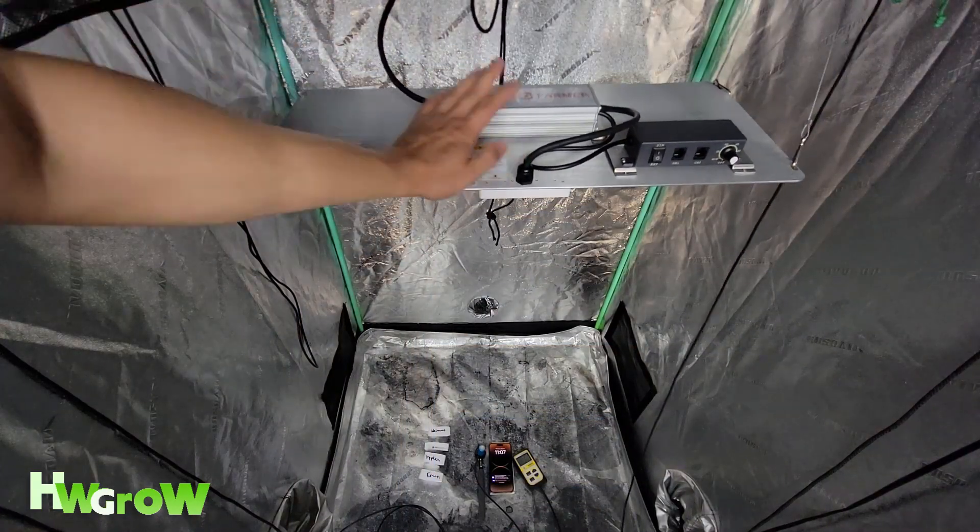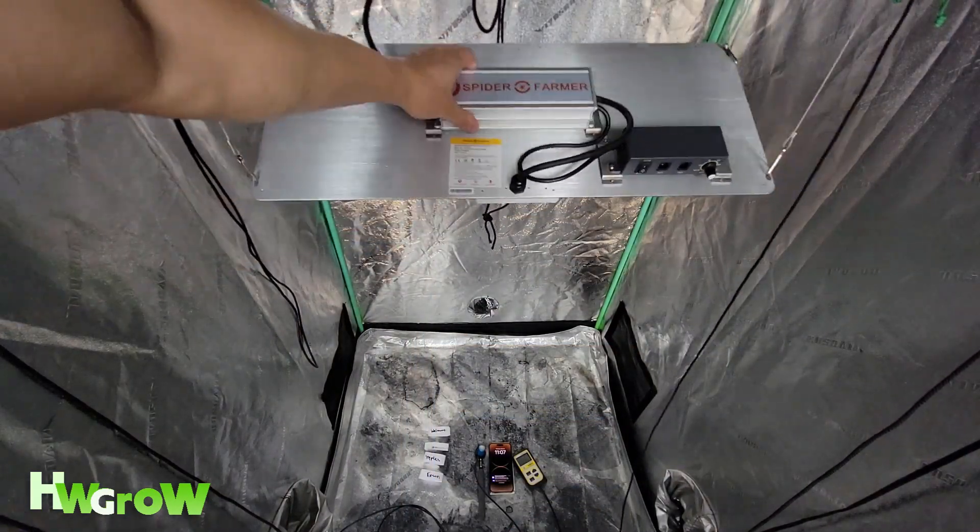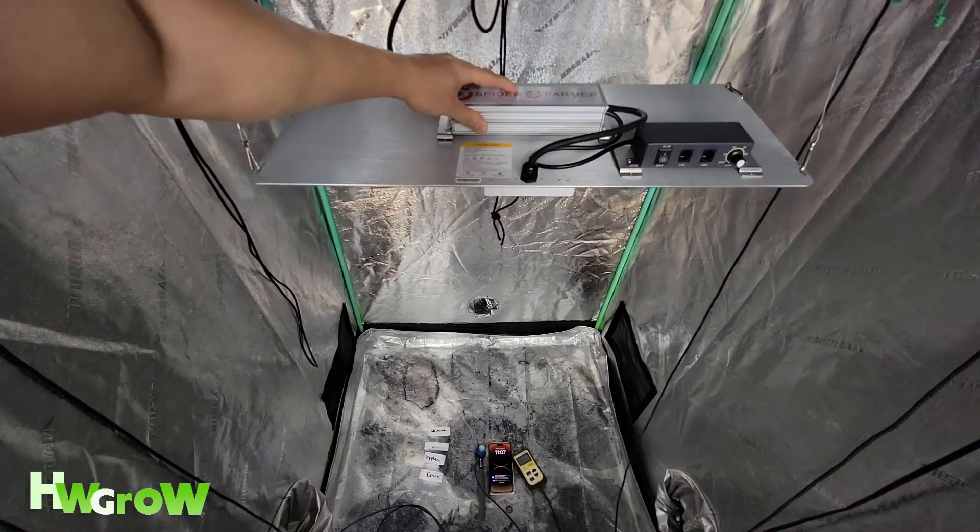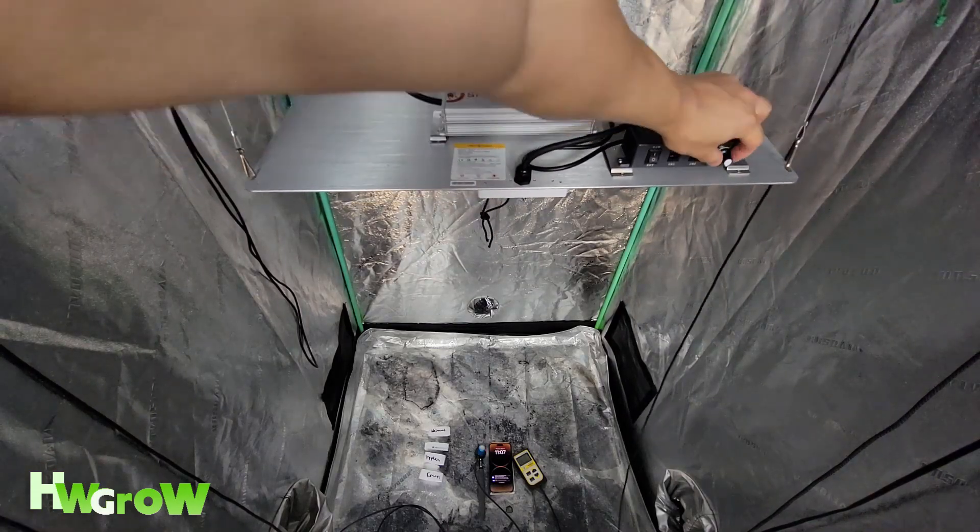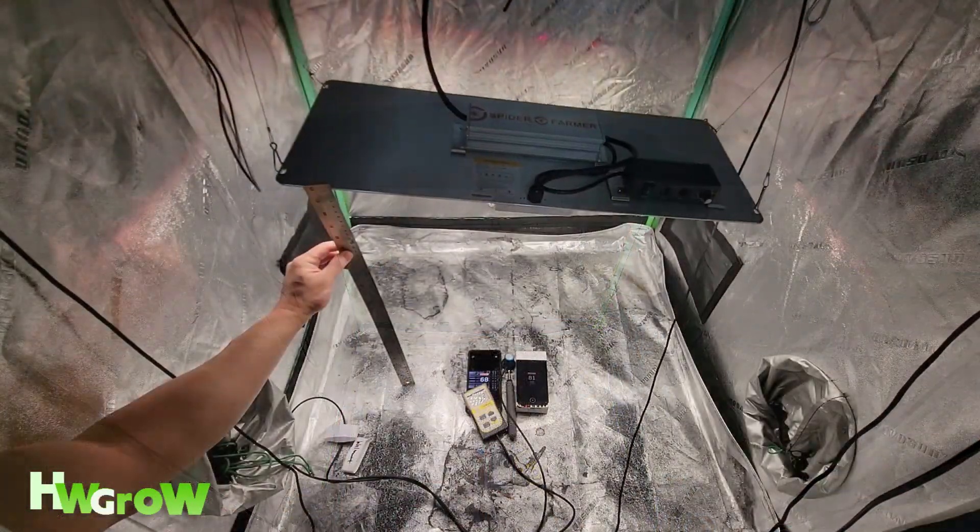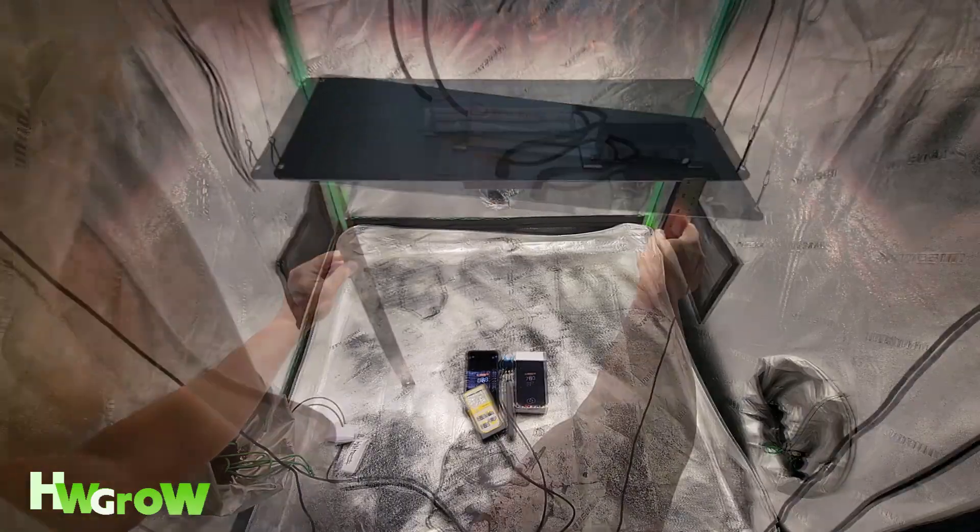Anyhow, these are the controls to my test. I have a 3x3 tent, my favorite light of all time, Spider Farmer SF2000, centered and exactly two feet up.